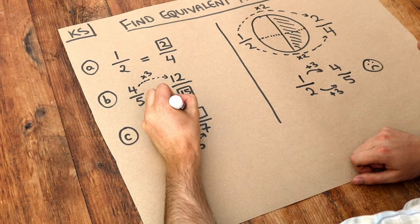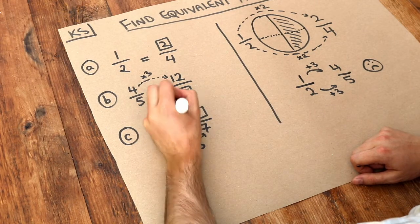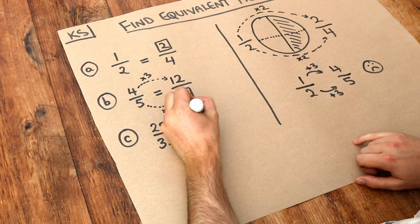If we divide the bottom by five, we also have to divide the top by five. 25 divided by five is five.